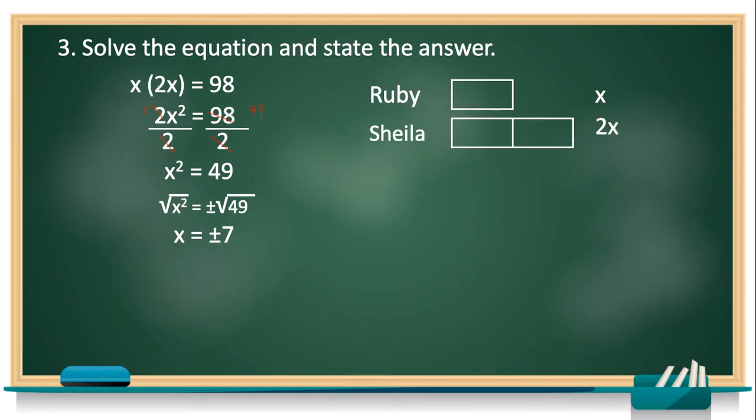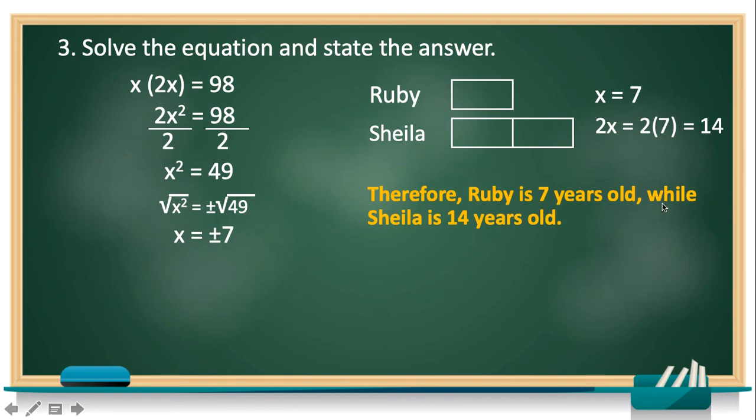So let's go back to our diagram where Ruby is X and Shella is 2X. Now that we have the answer of X, which is 7, and X is represented by Ruby, so Ruby is 7. Then let's solve Shella's age. Let's substitute 2X where X has the value of 7. So 2 times 7, which is equal to 14. Therefore, Ruby is 7 years old while Shella is 14 years old.